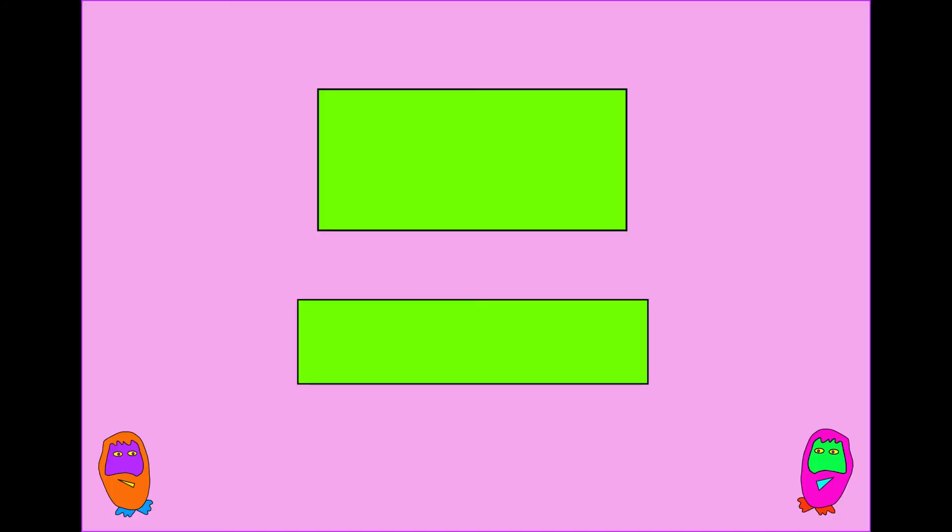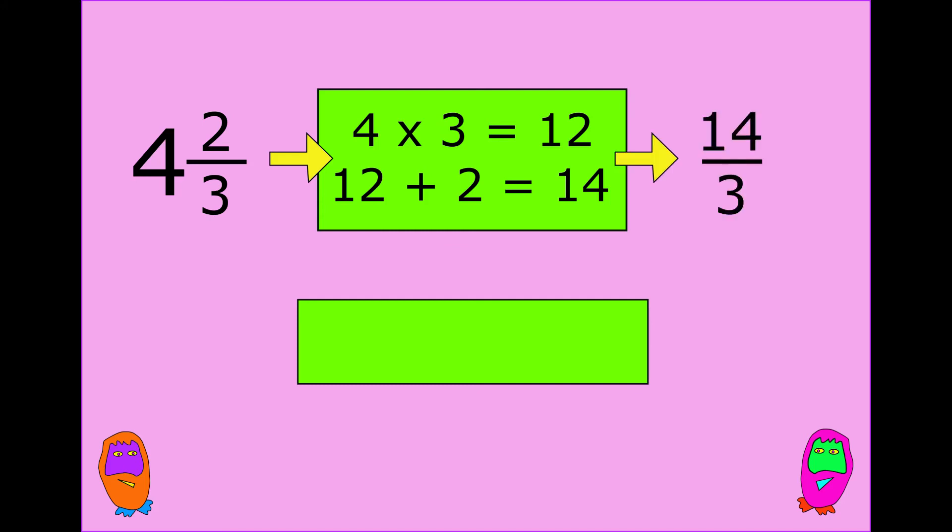Let's look at a couple more examples. Four and two thirds, I want to change that to an improper fraction. I take my whole number and times it by the denominator. Four times three gives you 12. And then we add that 12 to the numerator to give you 14. That means four and two thirds is the same as 14 thirds.